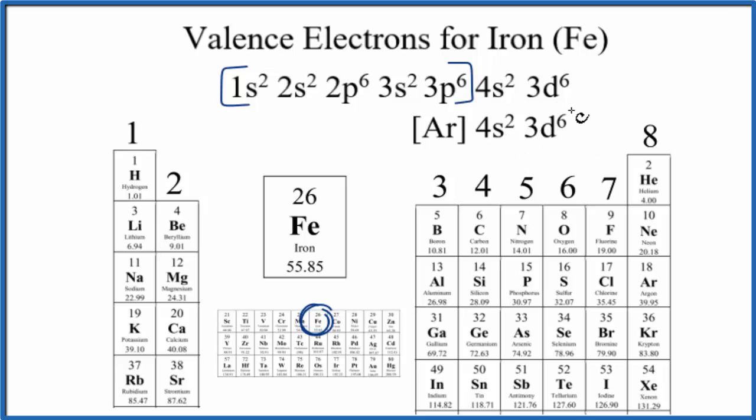These electrons right here, outside of the noble gas core, the argon, these are the valence electrons for iron. So iron has 2 plus 6. Iron has 8 valence electrons. So we're looking at the electrons outside this noble gas core here to find the valence electrons for iron.